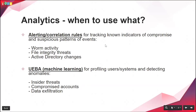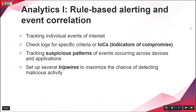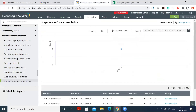Rule-based alerting helps you track known events of concern — for example, a top-level Active Directory group being modified. Building on that is event correlation: associating multiple alarms across systems and applications to detect things like worm activity, ransomware, and file integrity threats. However, more advanced attacks like APTs may bypass traditional rules. Attackers study your security policies and controls, using sophisticated techniques to evade detection — for example, carrying out a brute-force attack without triggering your account lockout policy.